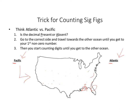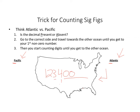One more example: take the number 1234 with two trailing zeros — so 123400. There's no decimal present, so it's absent and we're on the Atlantic side. We go to the first non-zero number and count to the other ocean: 1, 2, 3, 4 — four sig figs. Now watch: if I just put a decimal point behind it, making it 123400., the decimal is now present, so we switch to the Pacific side. Counting from the first non-zero number: 1, 2, 3, 4, 5, 6 — six sig figs. That decimal automatically changed how many sig figs we had.